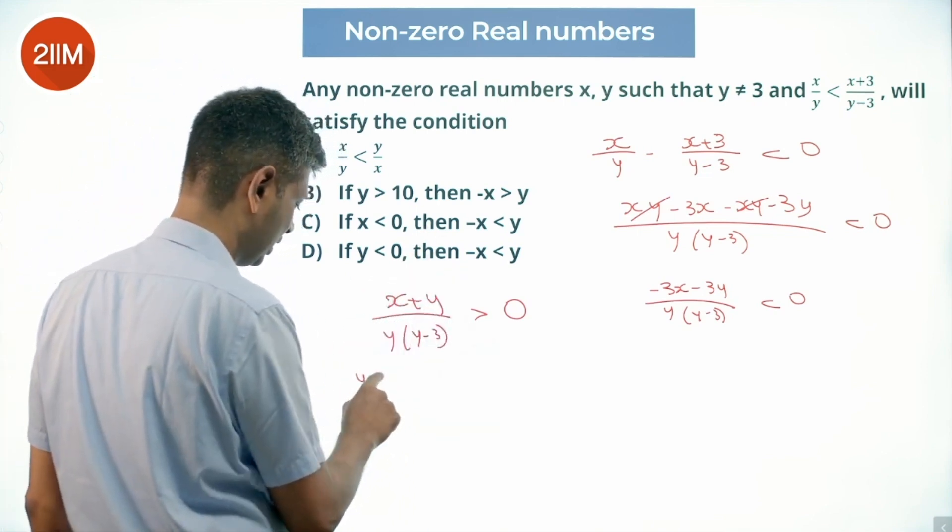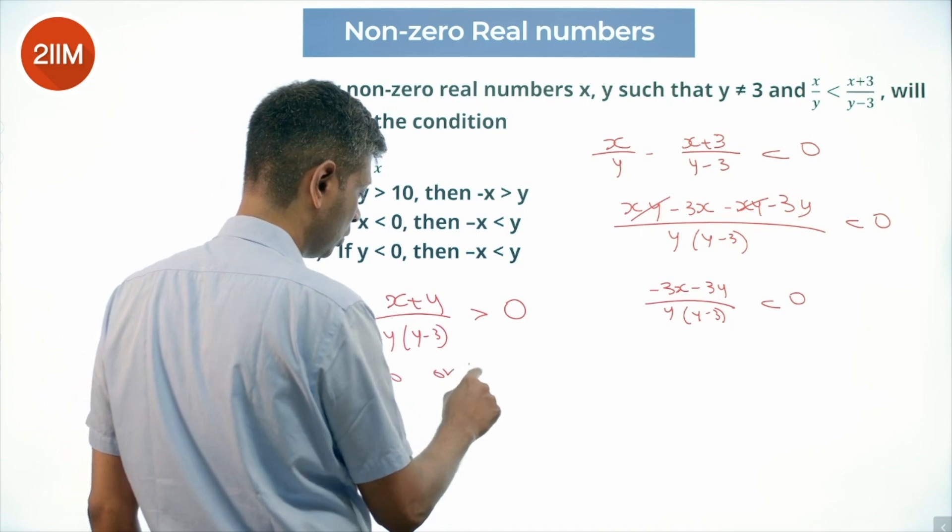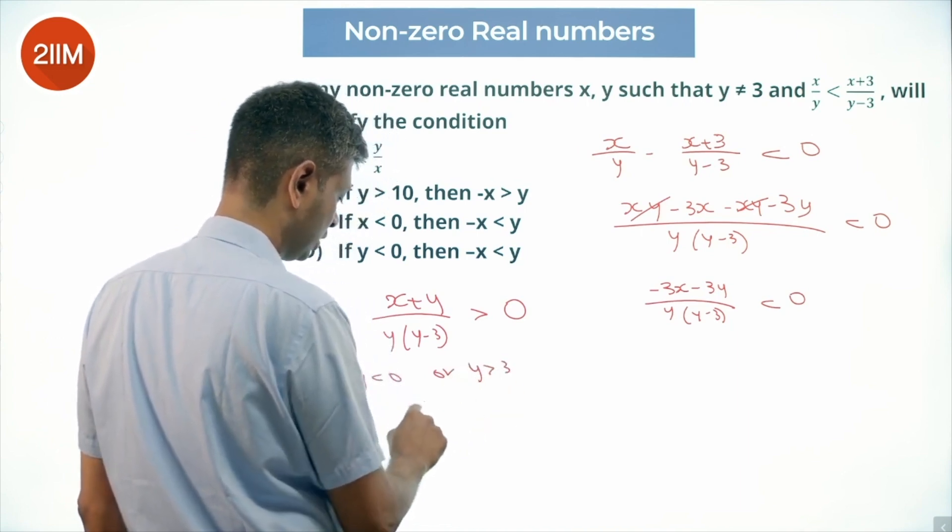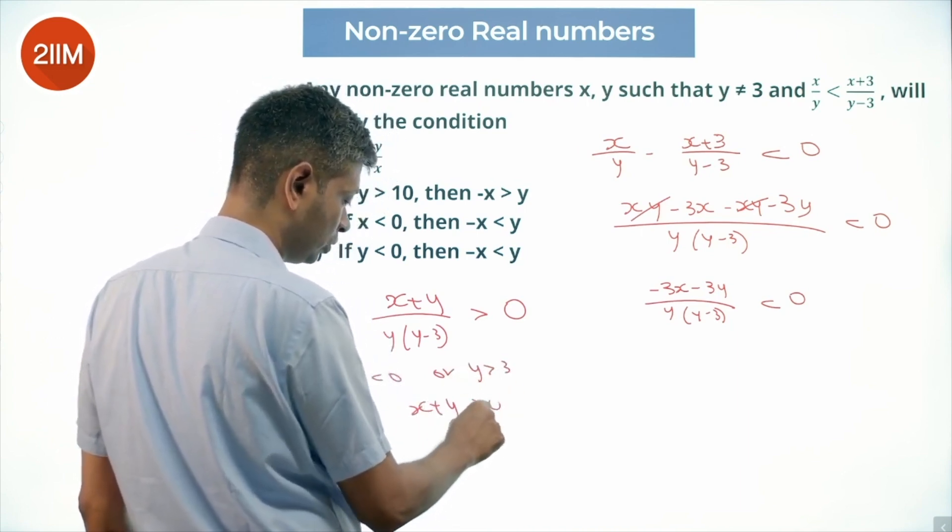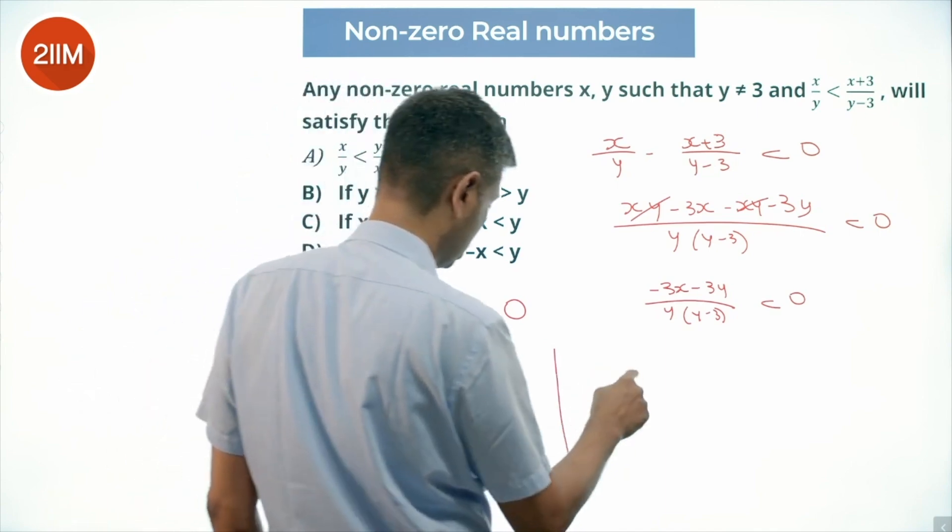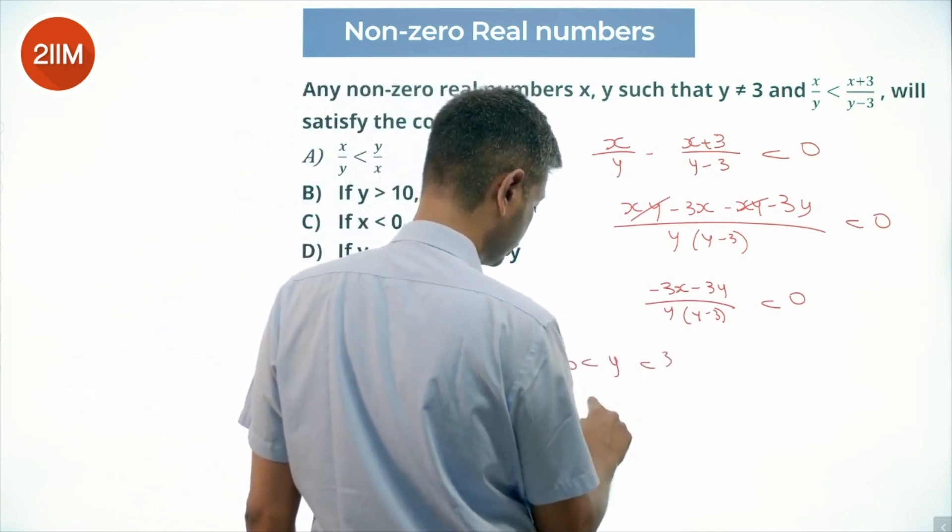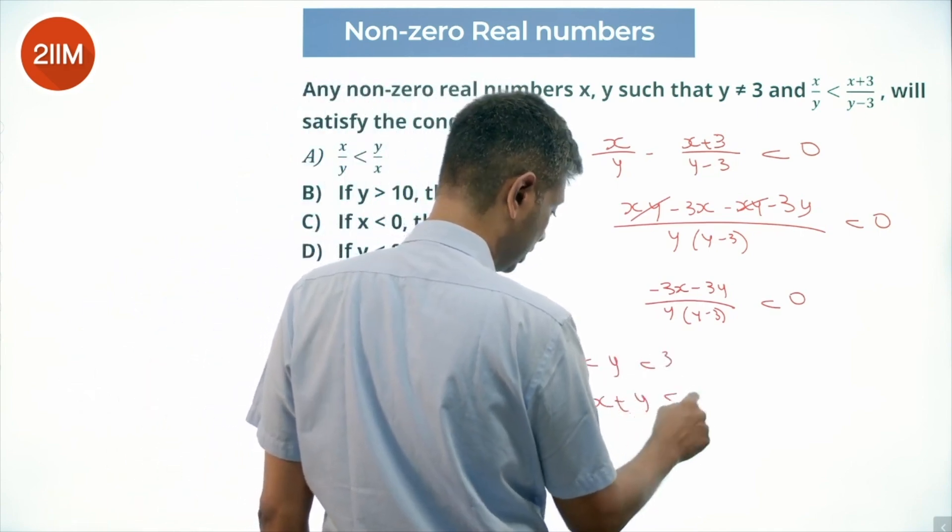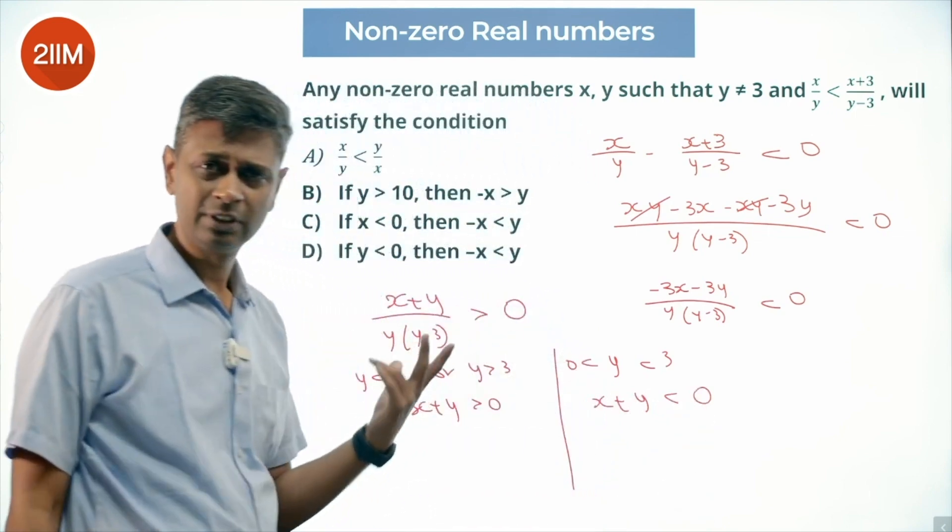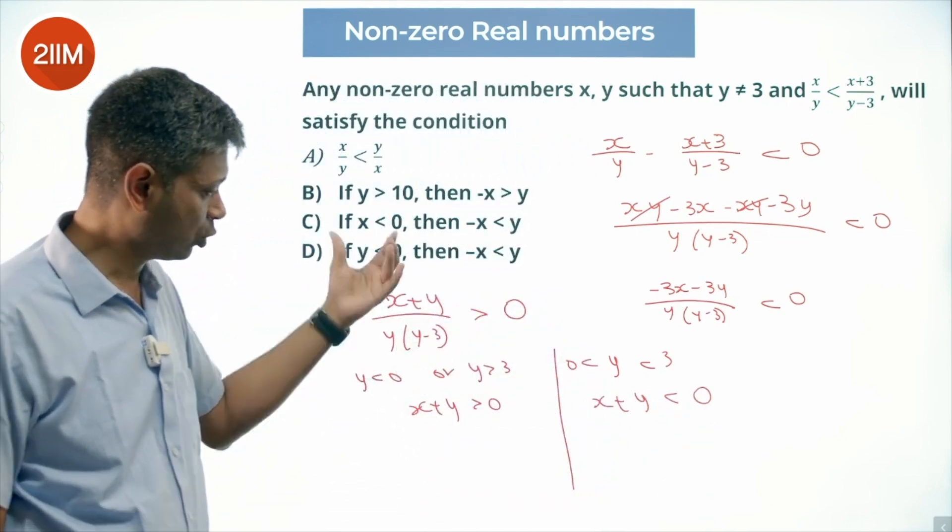So y less than 0 or y greater than 3, x+y greater than 0 this will work, or y between 0 and 3, x+y less than 0 this will work. Either both should be positive or both should be negative.